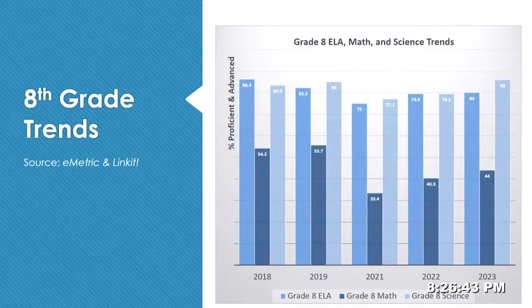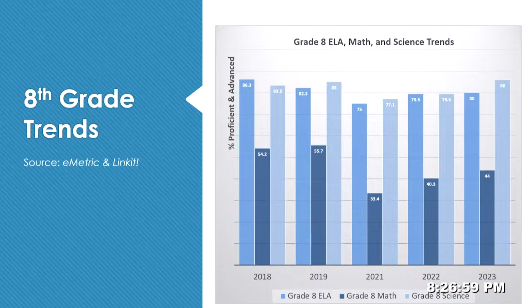The next slide is the grade eight trends. In eighth grade, they take ELA, math, and science. One of the areas we have talked about in the past and again this year — we can see that our math scores in eighth grade are an area where we want additional improvement. The ELA scores have remained relatively stable with some ups and downs, and science is much stronger even than it was before COVID — it has been strengthened over time.